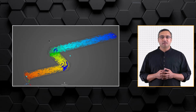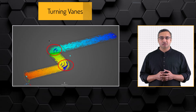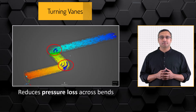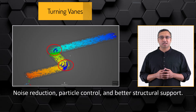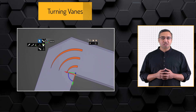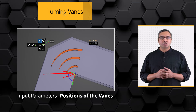In this example, we will consider a duct equipped with two sets of turning vanes. Turning vanes are used to help flows navigate geometrical bends and turns in a smooth fashion in order to reduce the pressure loss across the bends. They also provide added benefits such as noise reduction, particle control, and better structural support. The positions of the turning vanes, which can be adjusted by rotating them around an axis located at the inner corners of the duct, will be our input parameters.